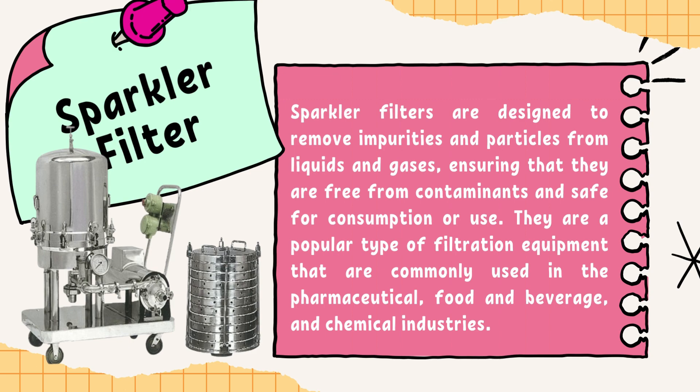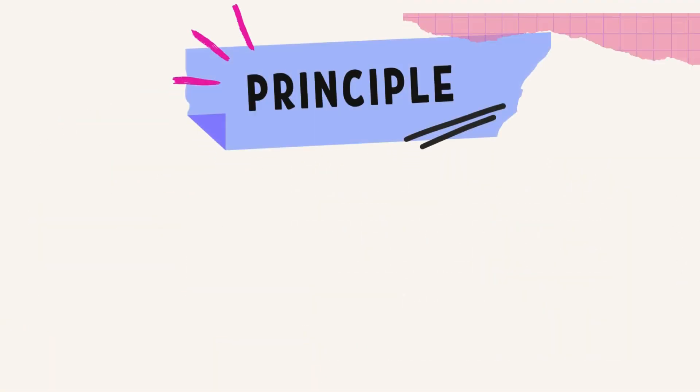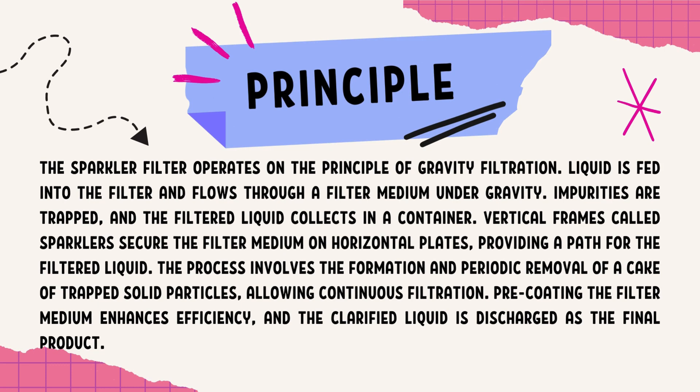Now we will look at the principle on which the sparkler filter operates. The principle of sparkler filter operation is based on gravity filtration. The liquid to be filtered is fed into the filter and flows through the filter medium under gravitational force. The impurities present in the fluid are trapped by the filter medium.